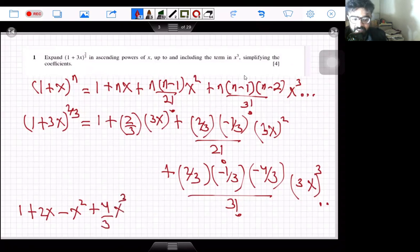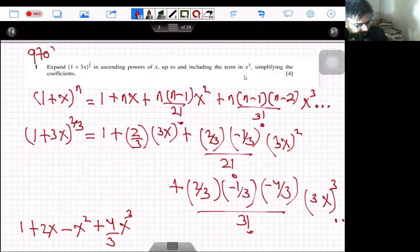So this is supposed to be your final answer. The first term is 1, the second term is 2x, the third term is -x², and fourth term is 4/3 x³. So this was question number 1 of 9709 May June 2021 paper number 33.